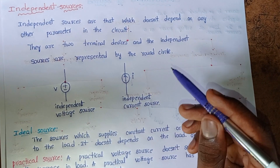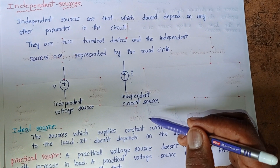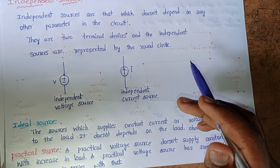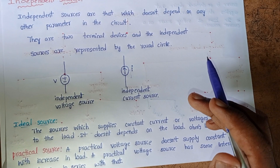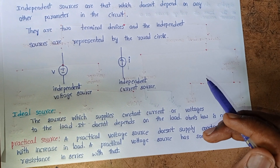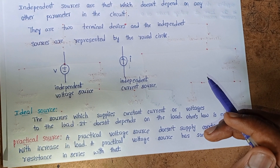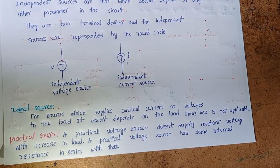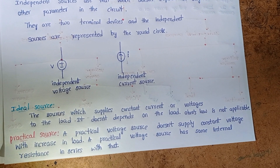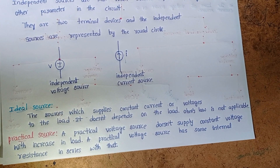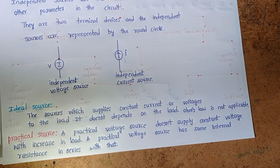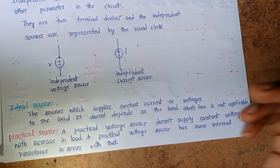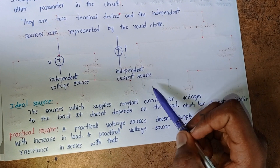There are mainly two types of independent sources: one is ideal source and another one is practical source. An ideal source is one which supplies constant current or voltage to the load — it does not depend on the load.